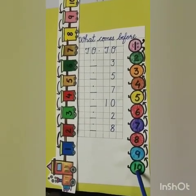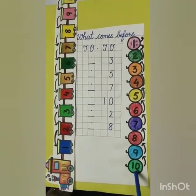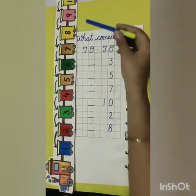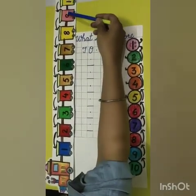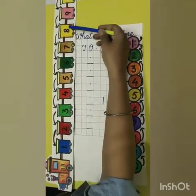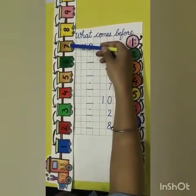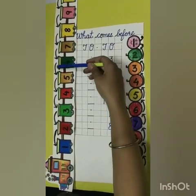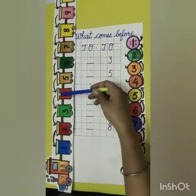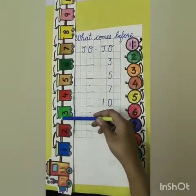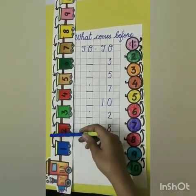But now I will count it backward from 10 to 1. Let's count: 10, 9, 8, 7, 6, 5, 4, 3, 2, 1.